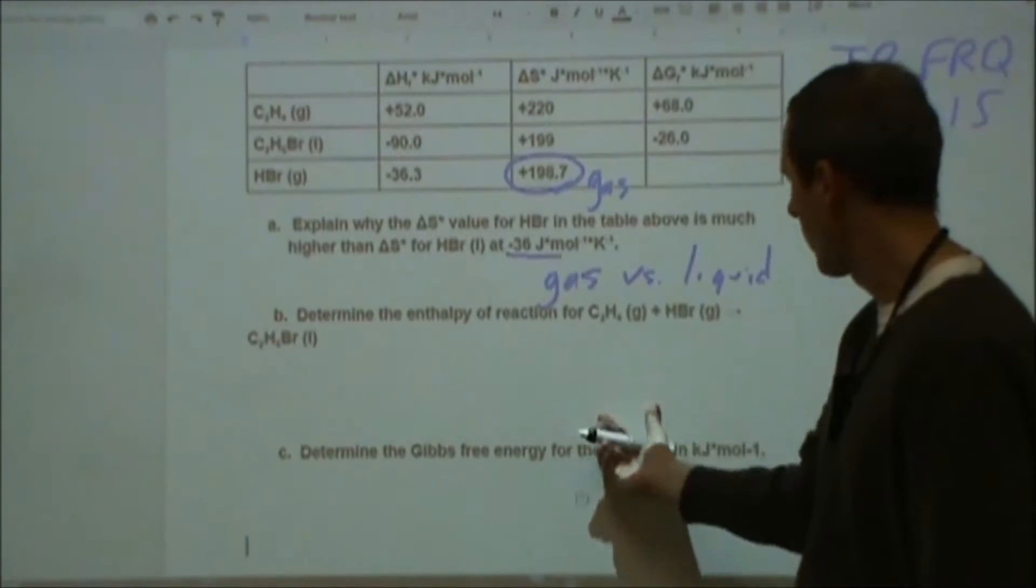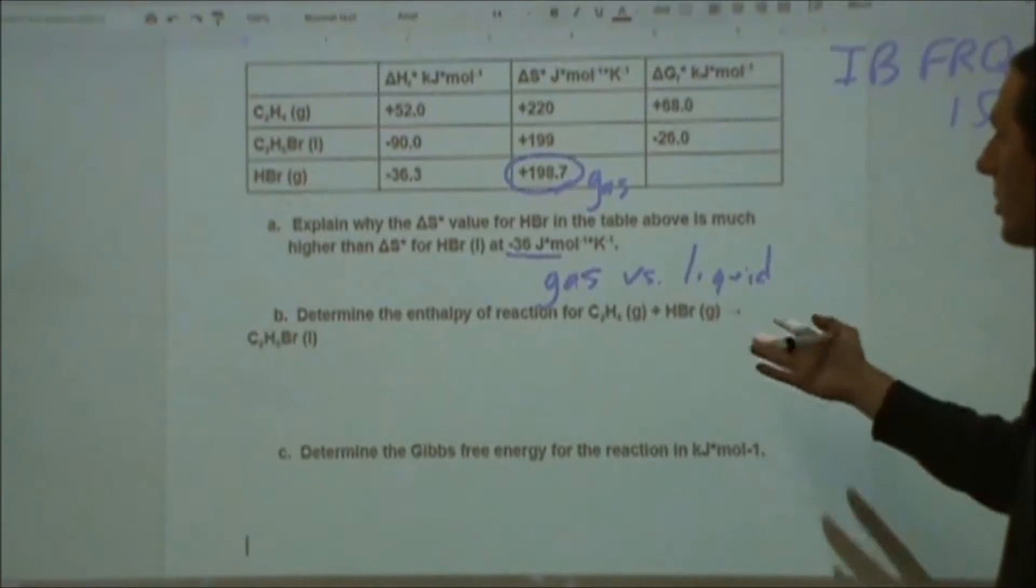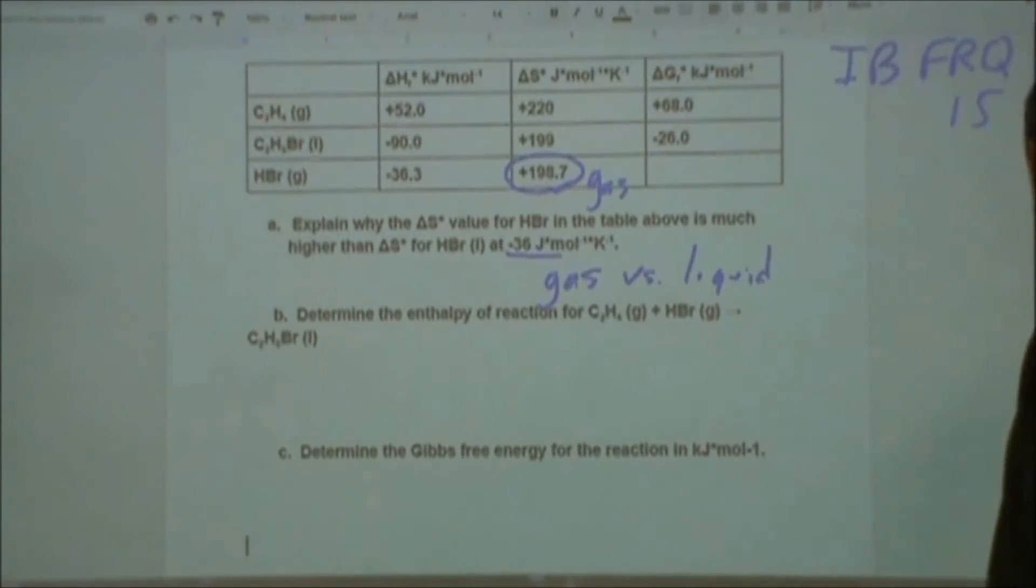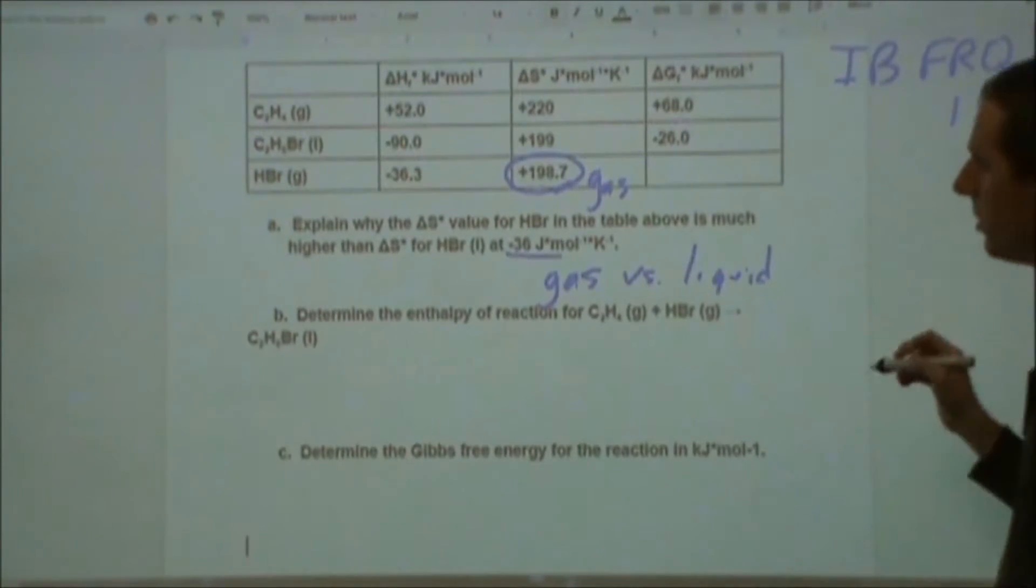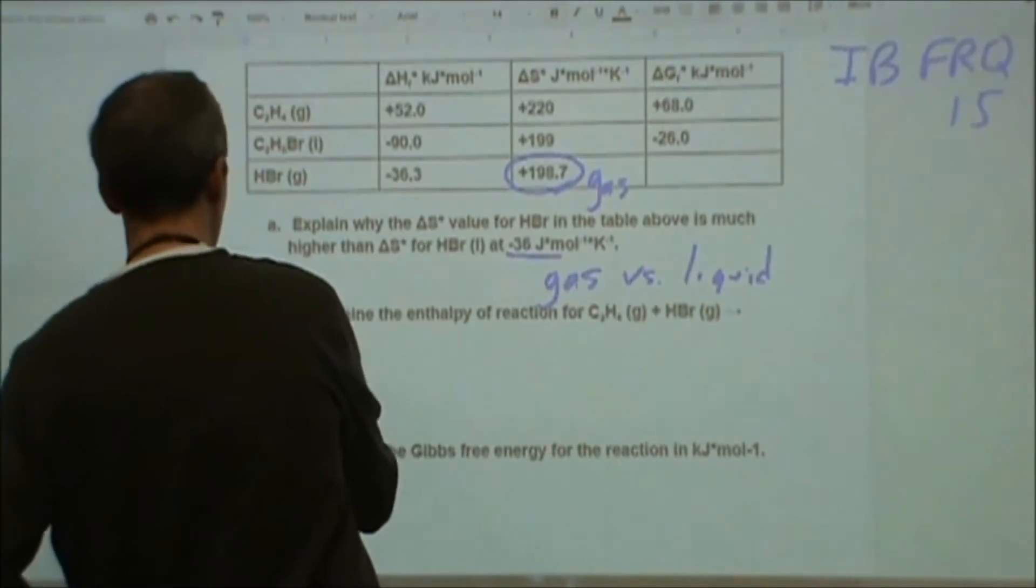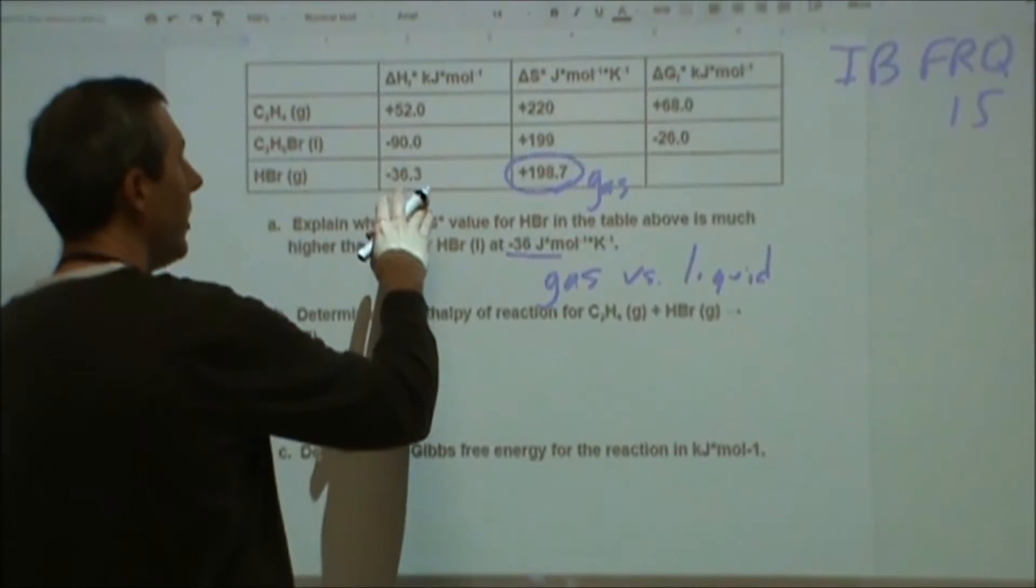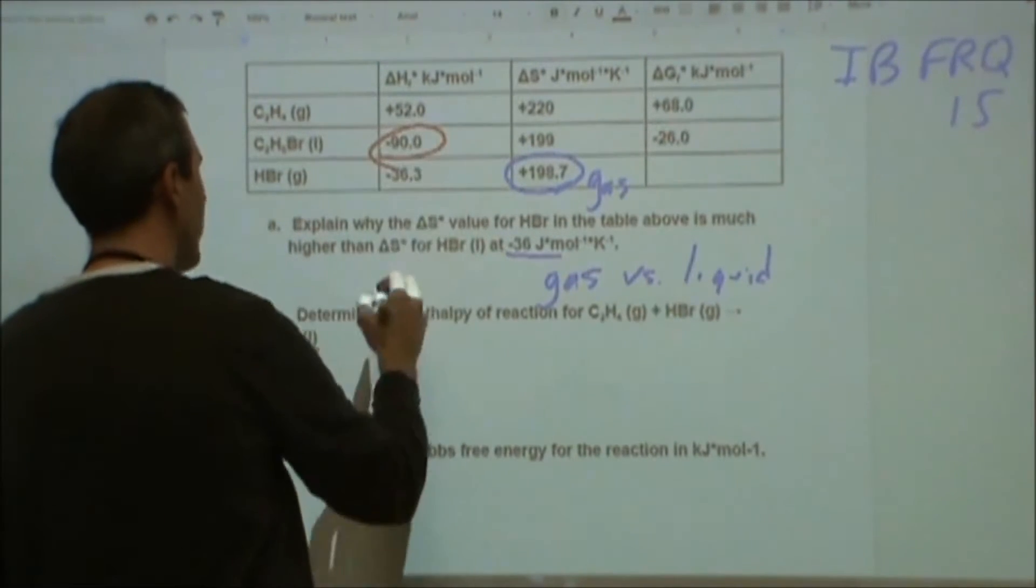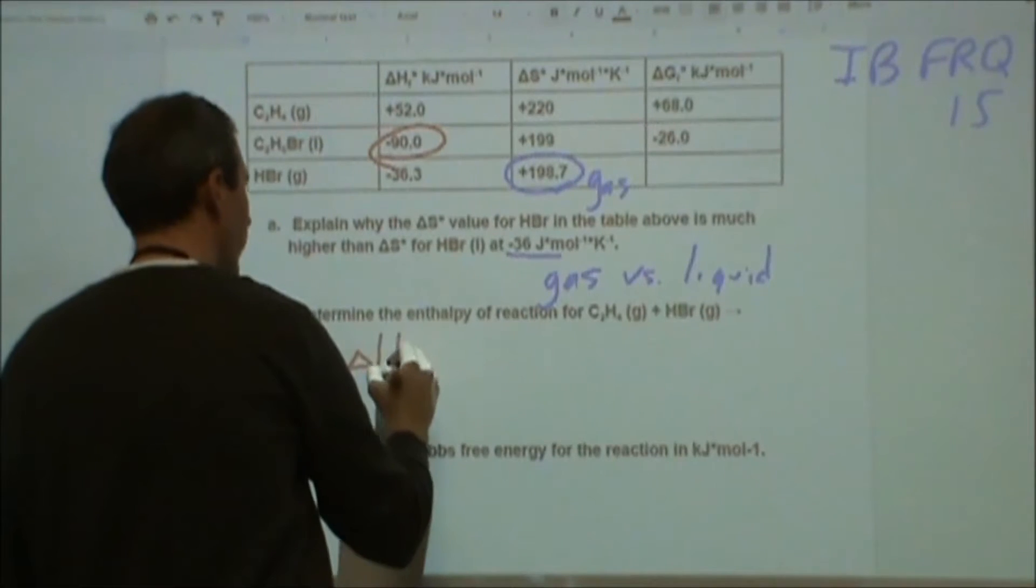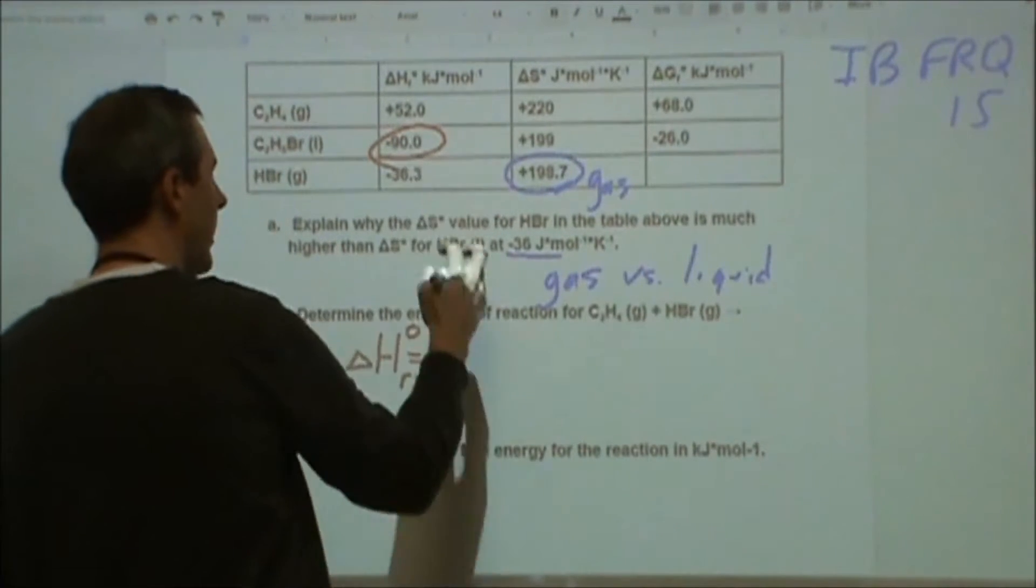Moving on from there we start to get into some quantitative analysis. Part B says figure out the enthalpy of reaction for this reaction. So to do that we're going to use the chart, we're going to do the sum of all of the products, which in this case there is one. So the C2H5Br, the bromoethane, and the enthalpy value for that is negative 90.